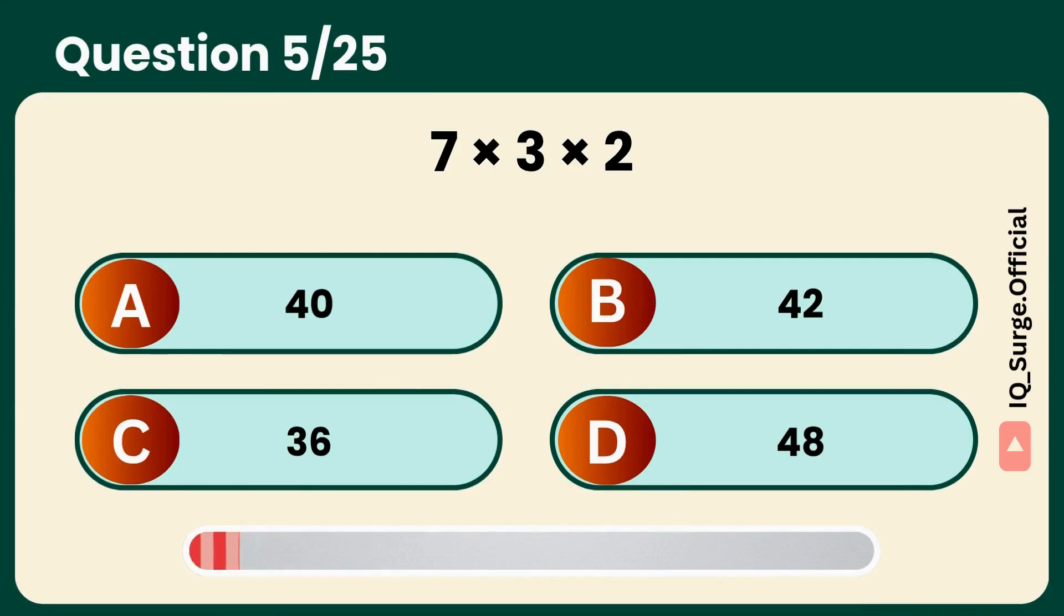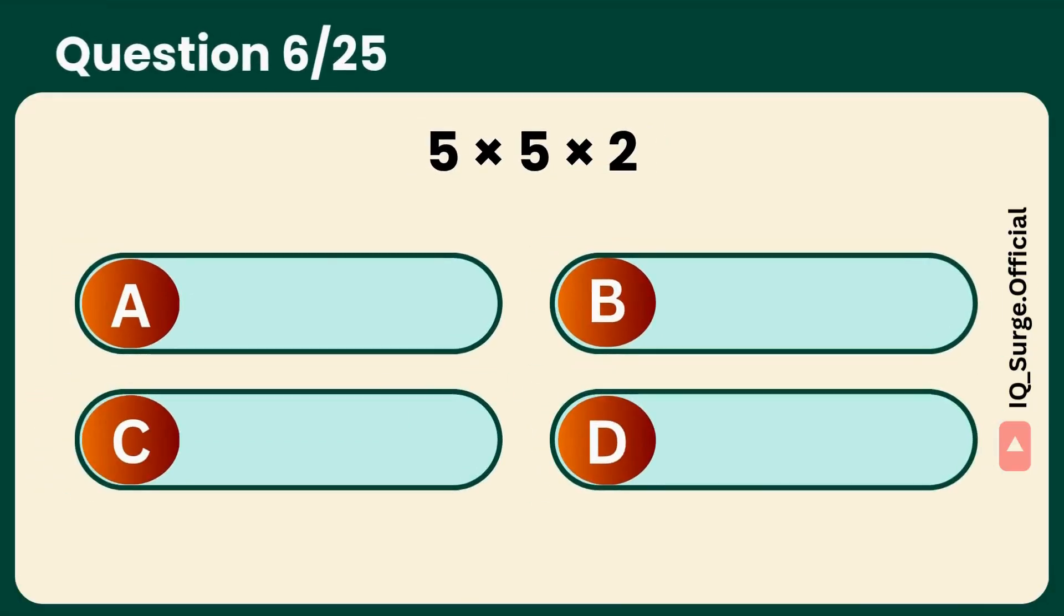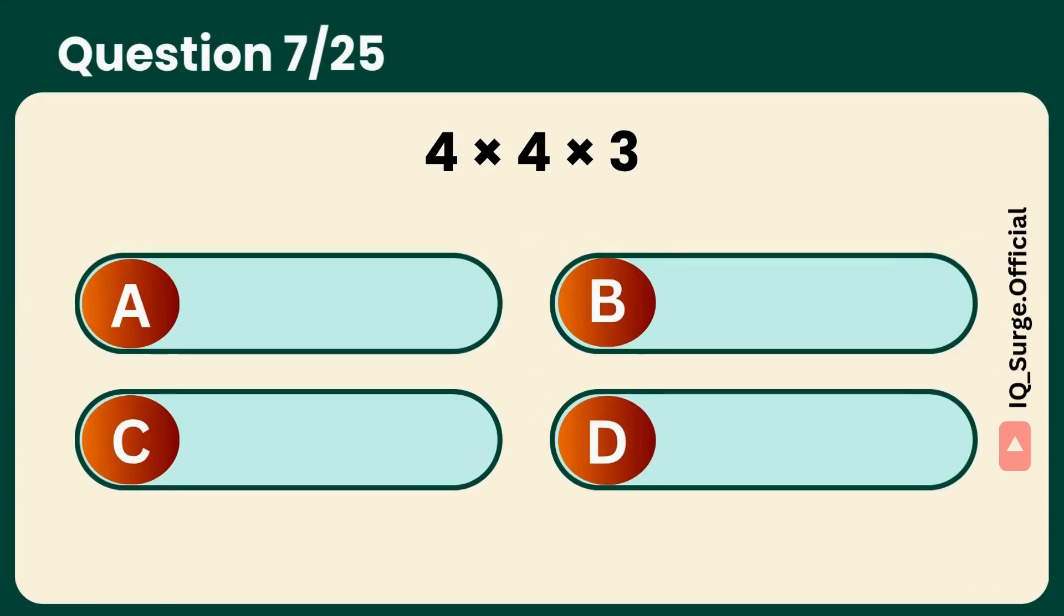What is 7 times 3 times 2? Stay sharp, don't slip. Answer: B, 42. What is 5 times 5 times 2? Two fives, interesting. Answer: C, 50.